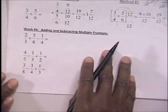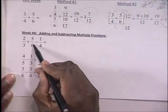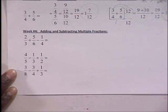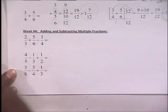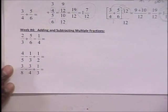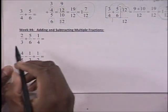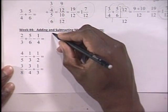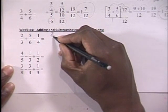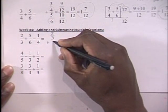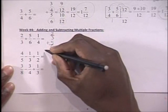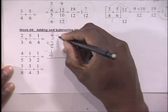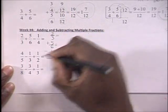So now we have 2 thirds plus 5 sixths minus 1 fourth. We're going to graduate these problems a little bit — now you're adding and subtracting 3 different fractions. Let's solve this the same way we've done before, lining these fractions up: 2 thirds plus 5 sixths minus 1 fourth.